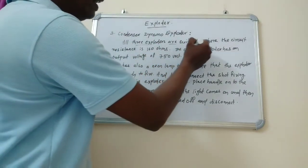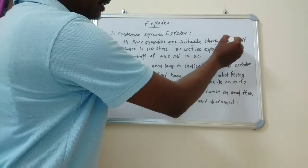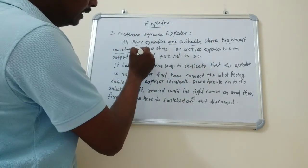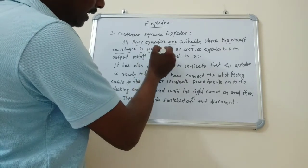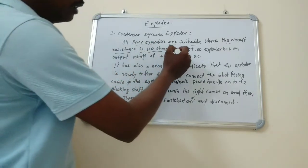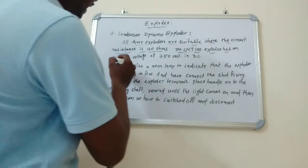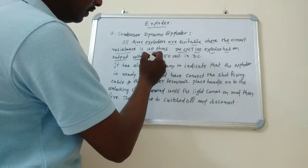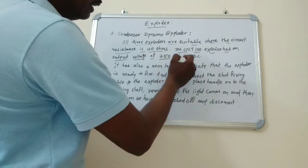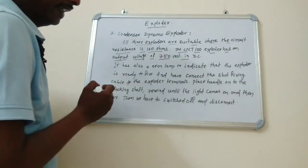All three exploders are suitable where the circuit resistance is above 160 ohms. The CNP100 exploder has an output voltage of 750 volts DC.